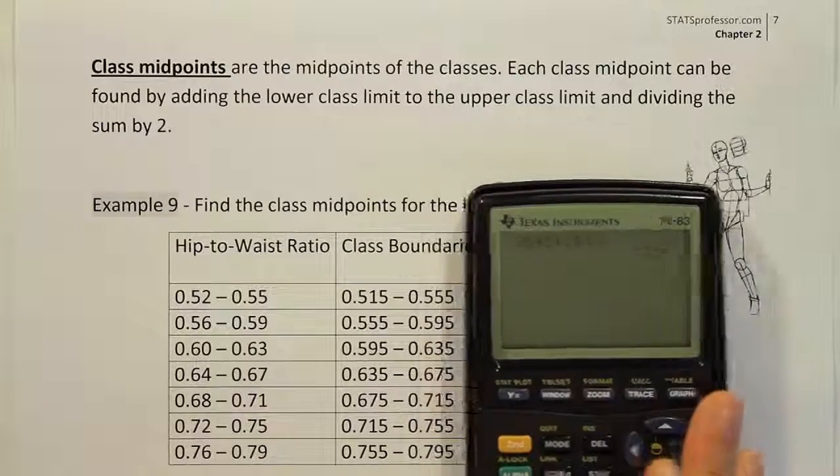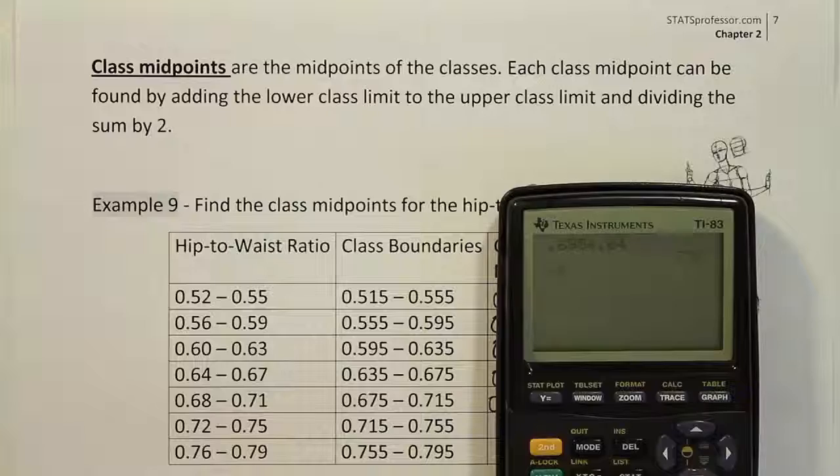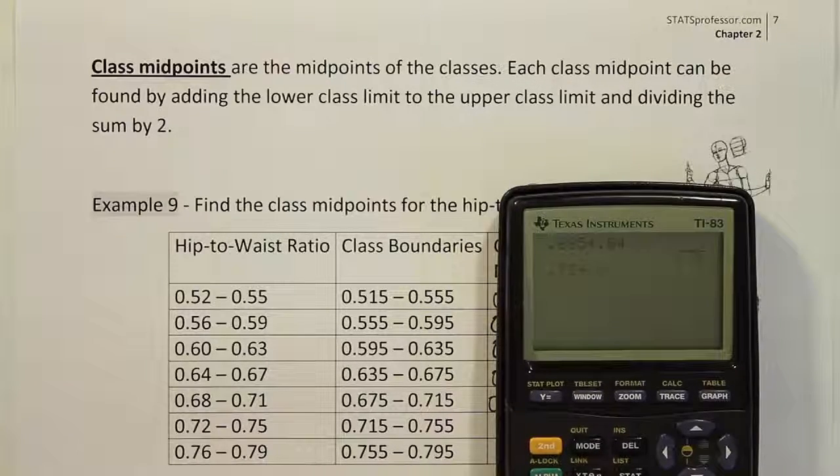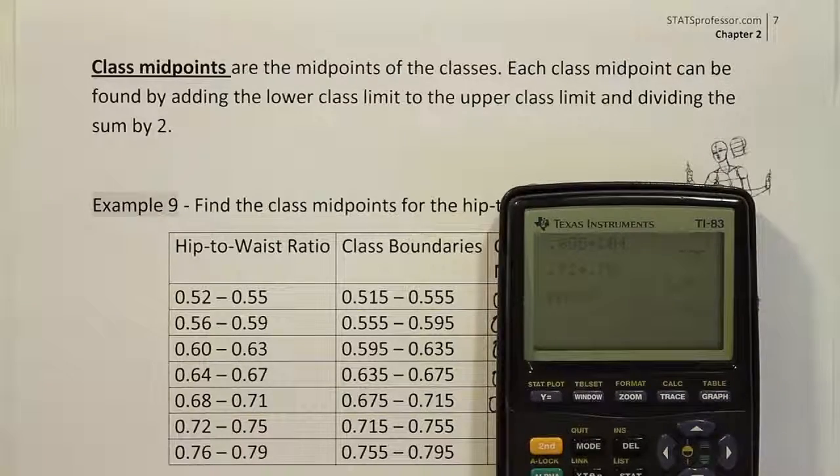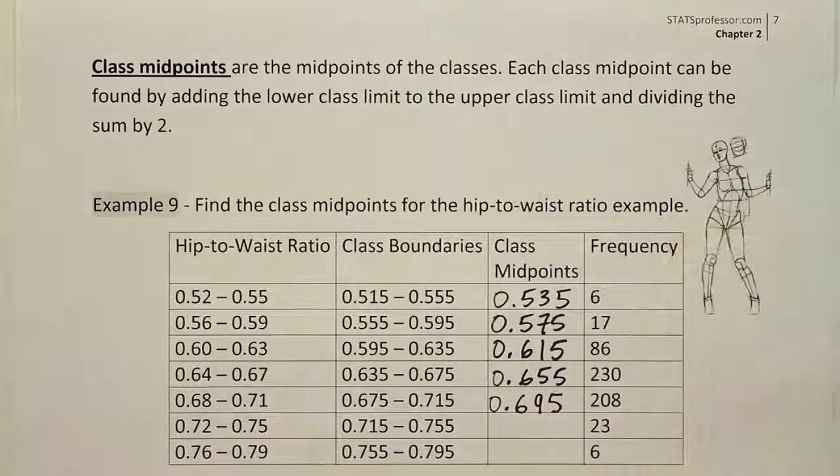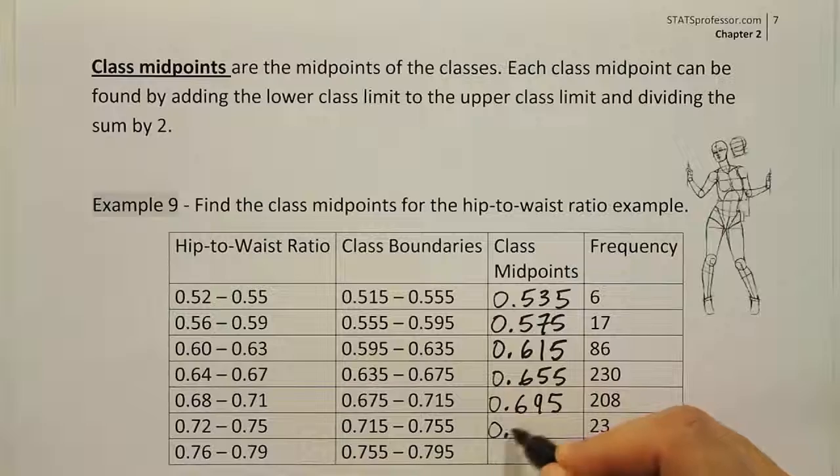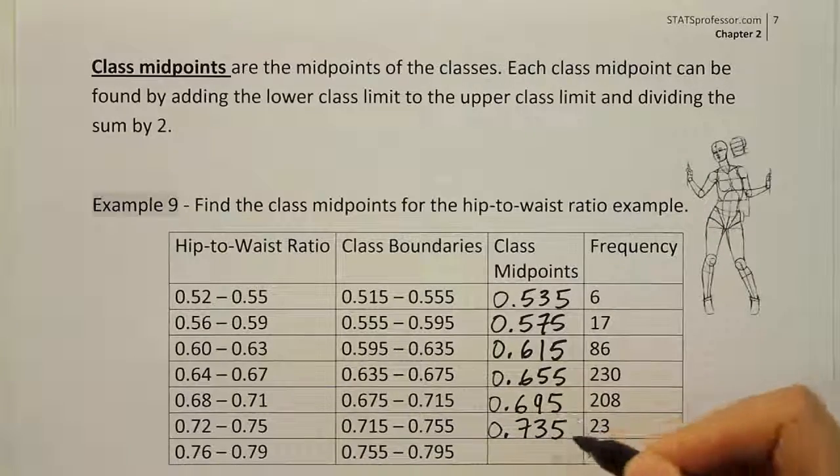And the reason why I say that's the right answer is because if I check that, .72 plus .75, and then I divide that by 2, I of course get .735. So we see we get the same answer. So 0.735. Alright.